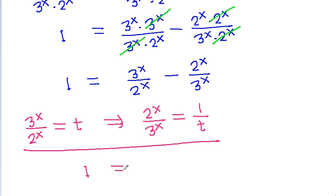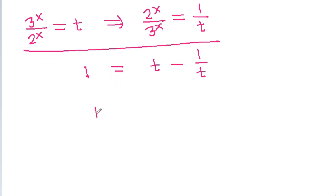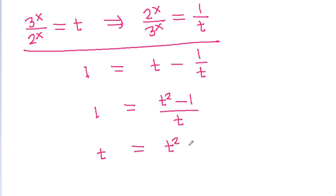So, 1 is equal to t minus 1 divided by t. And 1 is equal to (t squared minus 1) divided by t, which gives t is equal to t squared minus 1. So, t squared minus t minus 1 is equal to 0.